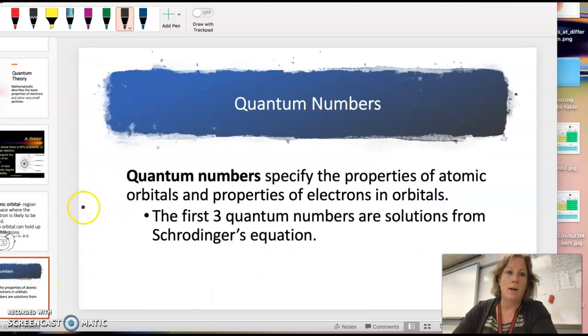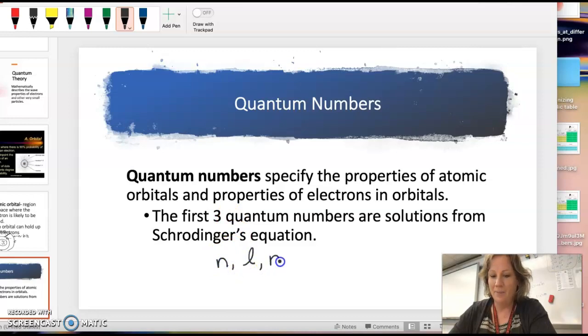We do have something called quantum numbers. These are actual letters, but they are the properties of the orbitals, and they tell us a way to describe where the electrons are likely to be found. The first three quantum numbers are N, L, and M sub L, and I'm going to talk about each one. These are actual mathematical solutions to Schrödinger's equation.